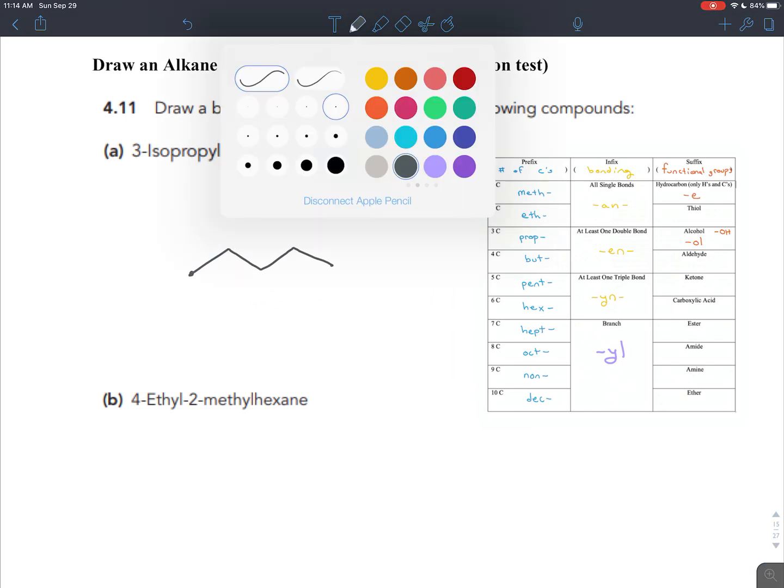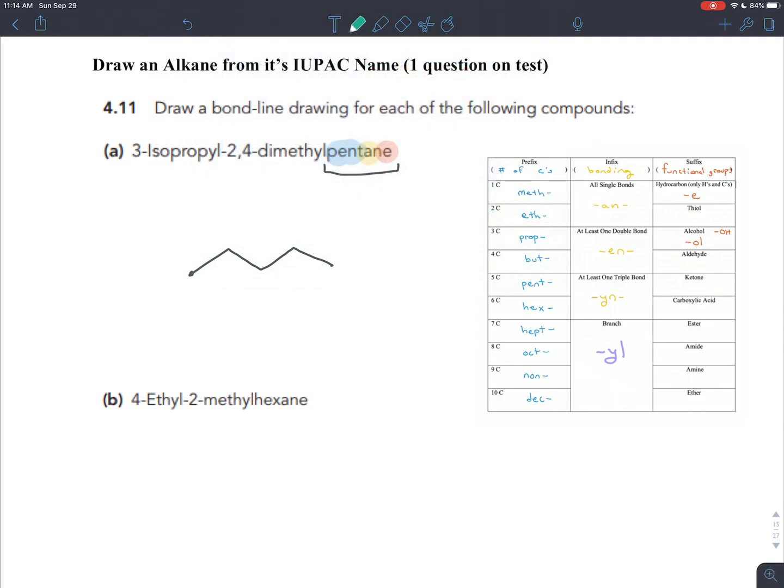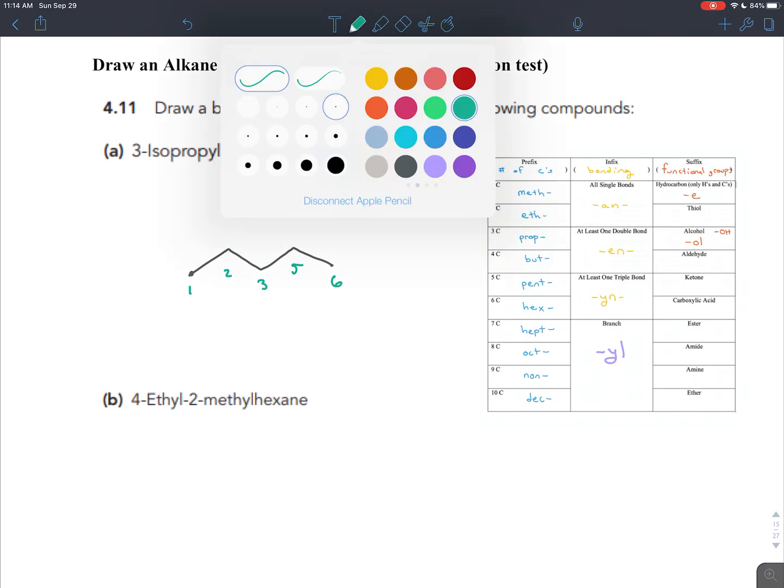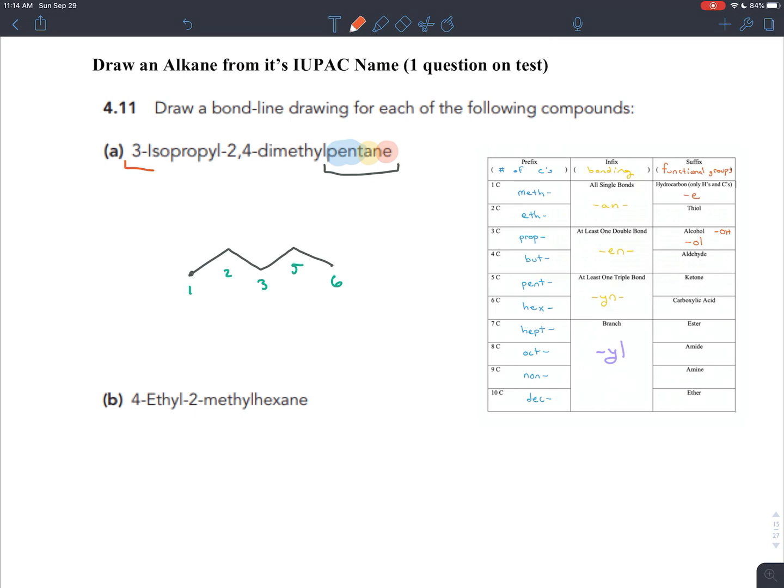Now we get to number this however we want to. We're drawing the molecule. So I'm going to number it just left to right. It's easiest for me to see things that way. Then you just look at each branch. For our first branch, we have an isopropyl branch coming off of carbon number three. Remember isopropyl was when you have that snake's tongue and just three carbons in it.